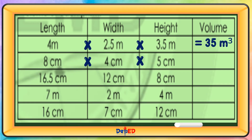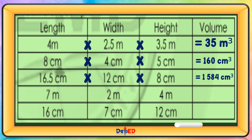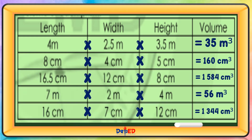Practice calculations: a result of 160 cubic centimeters; 16.5 cm × 12 cm × 8 cm equals 1,584 cubic centimeters; 7 meters × 2 meters × 4 meters equals 56 cubic meters; 16 cm × 7 cm × 12 cm equals 1,344 cubic centimeters.